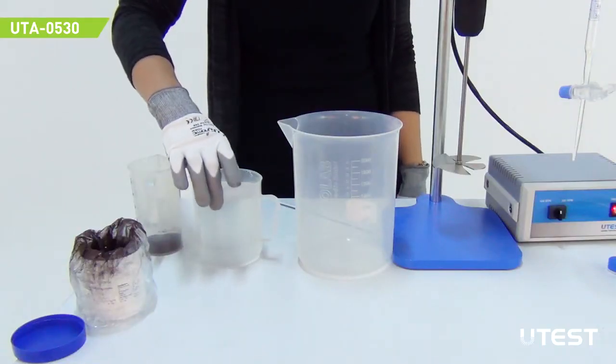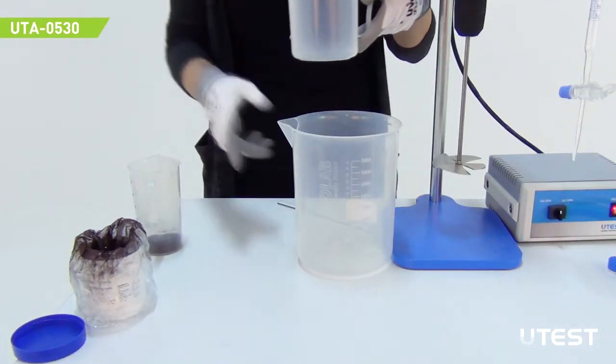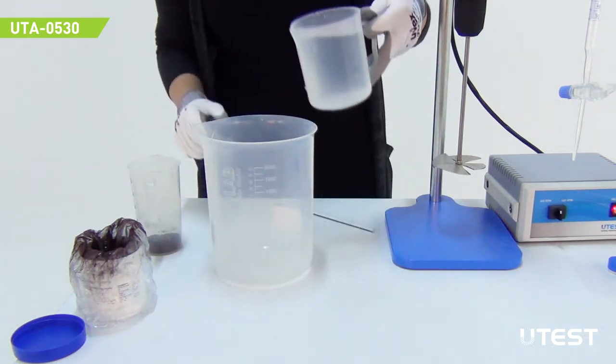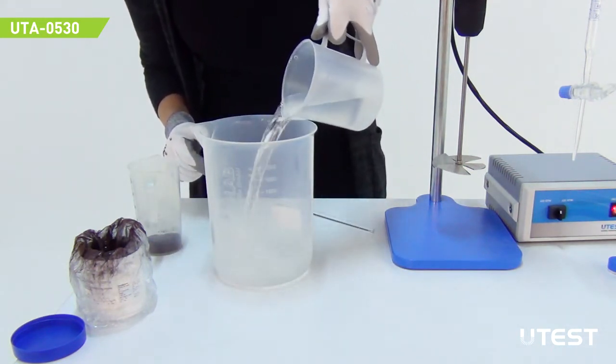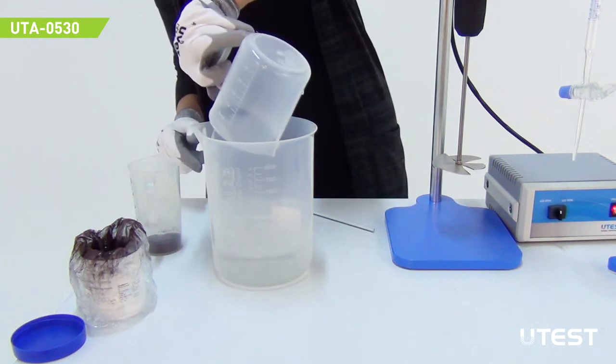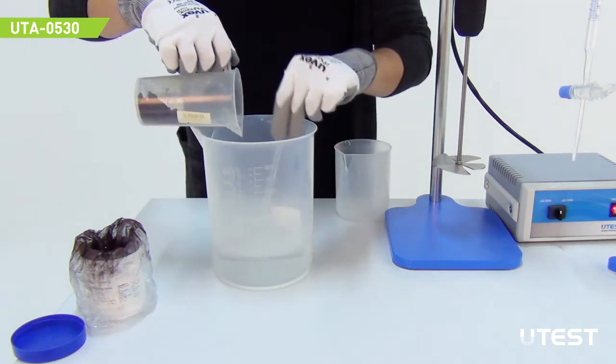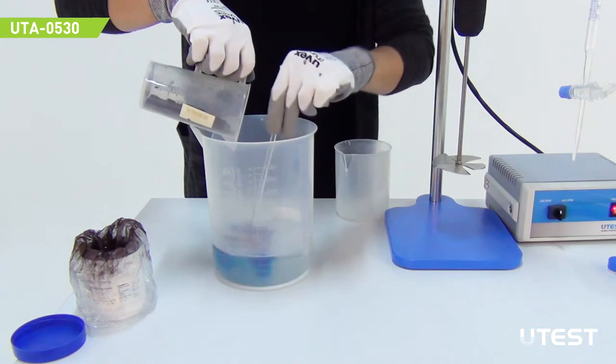Before starting the methylene blue experiment, a methylene blue solution should be prepared. To prepare a 10 gram per liter dye solution, add 500 ml of distilled or demineralized water to the beaker at 40 degrees Celsius.